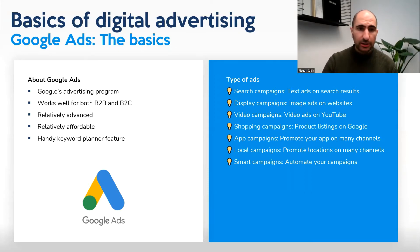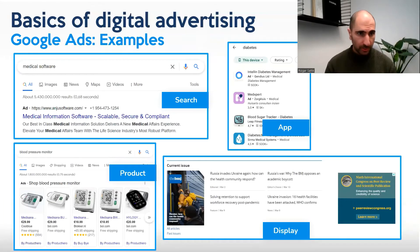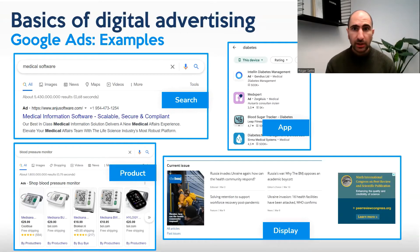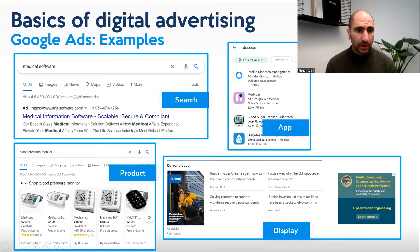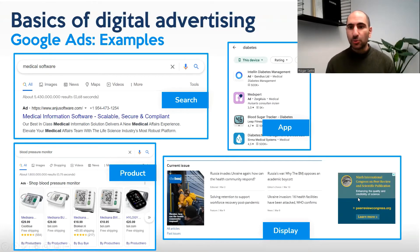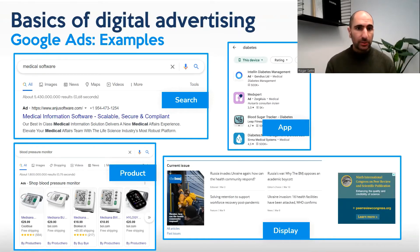Some examples within the life sciences field: if someone searches for 'medical software,' an ad from engissoftware.com appeared in search results. If I search for diabetes-related apps, ads for diabetes management apps pop up first. Searching for 'blood pressure monitor' shows shopping ads for those devices. And here's an example of a display ad for a peer-review congress that appeared on screen. These are some examples of where you can place your ad.